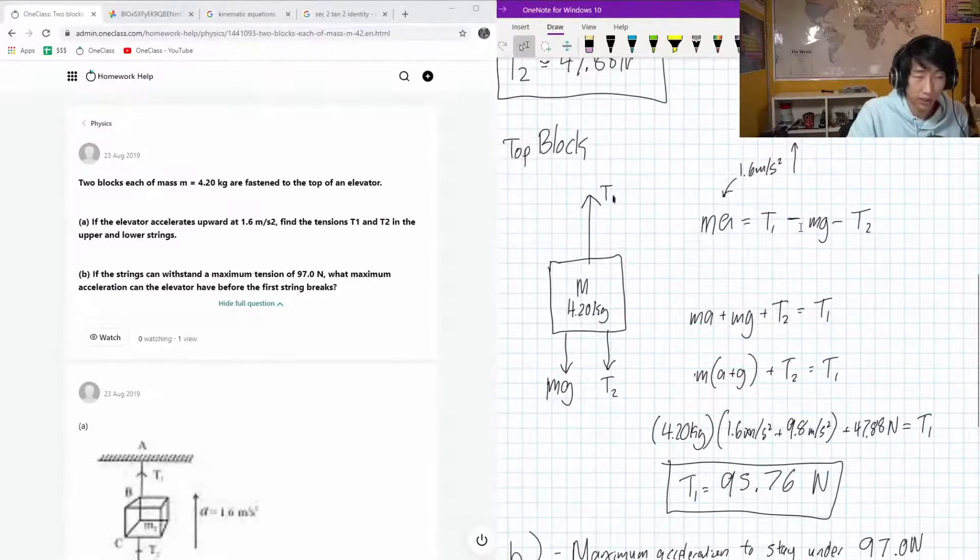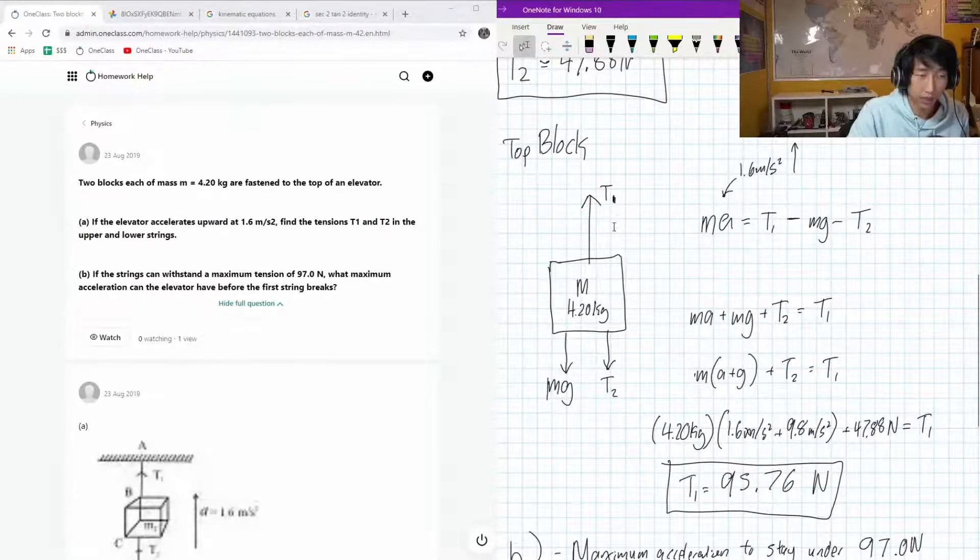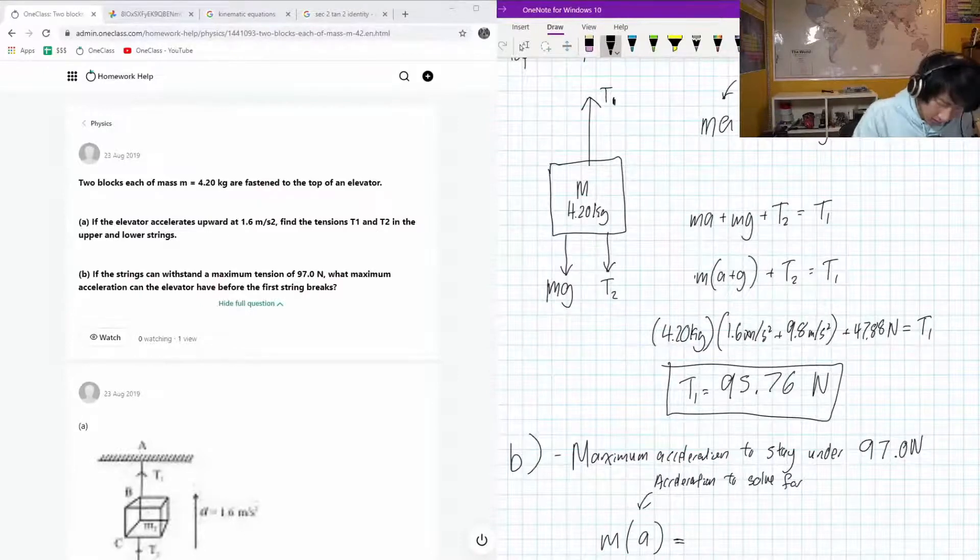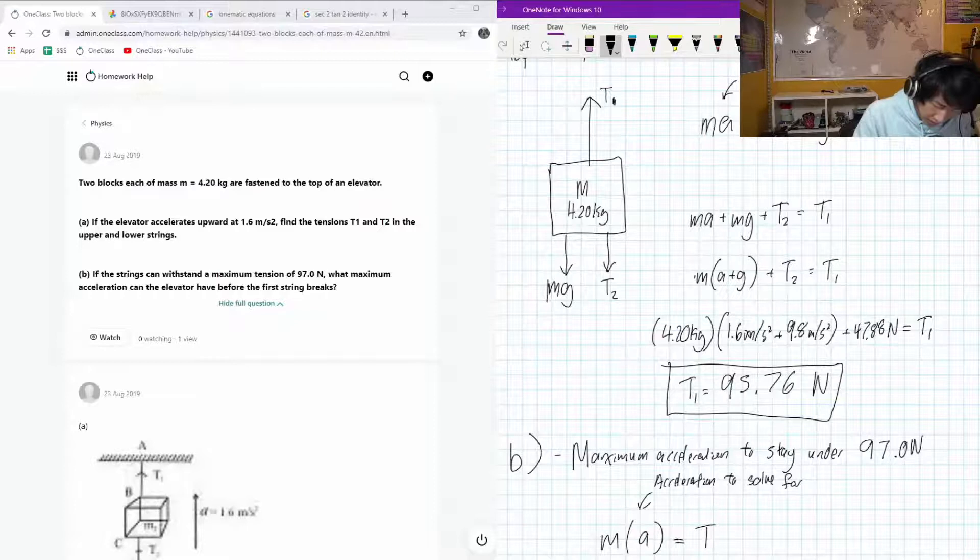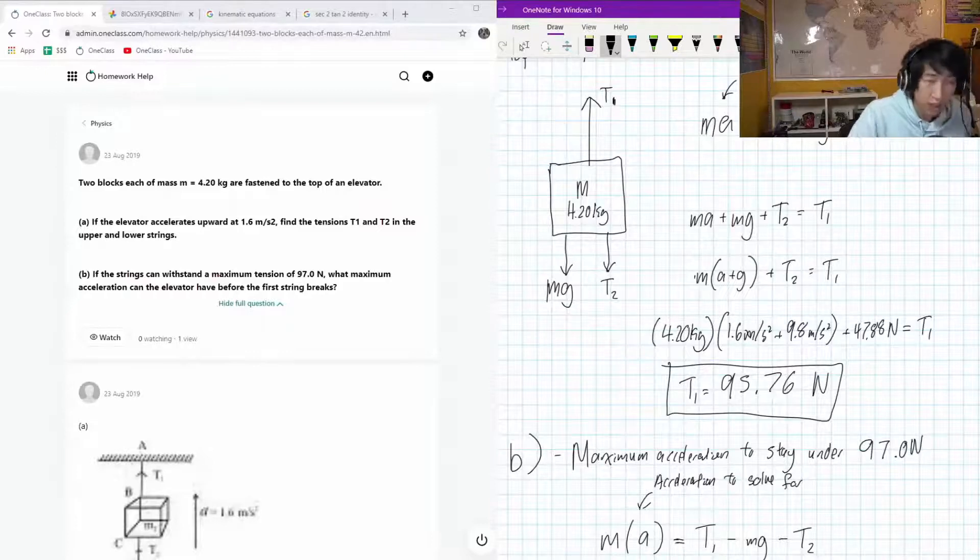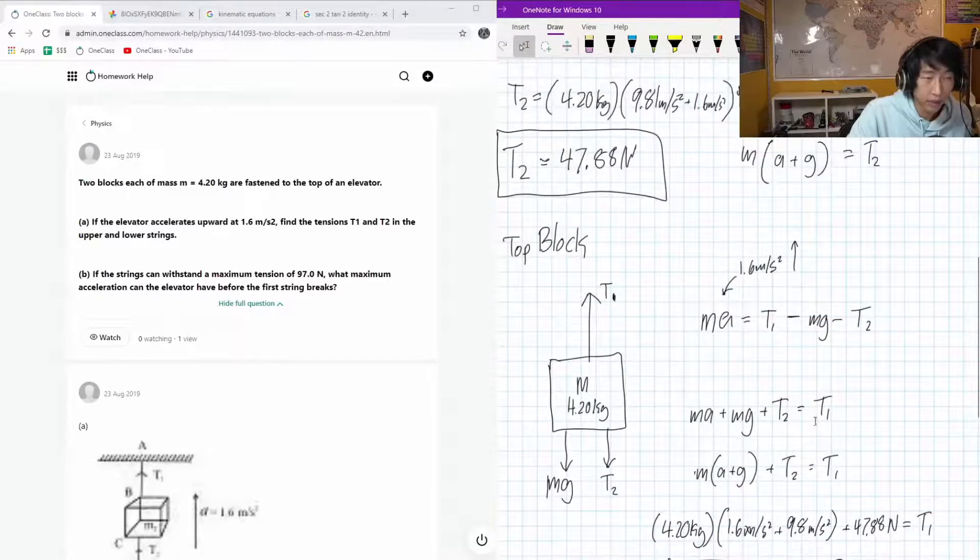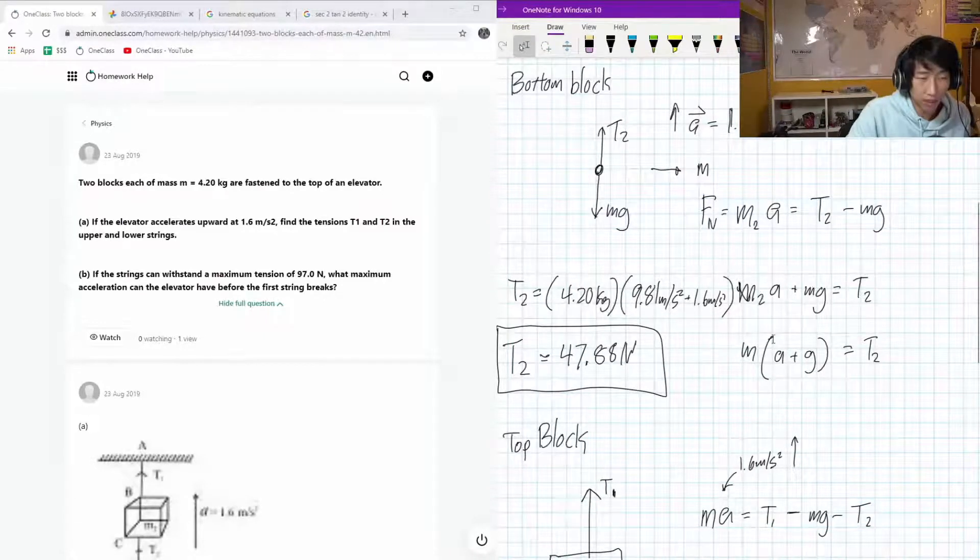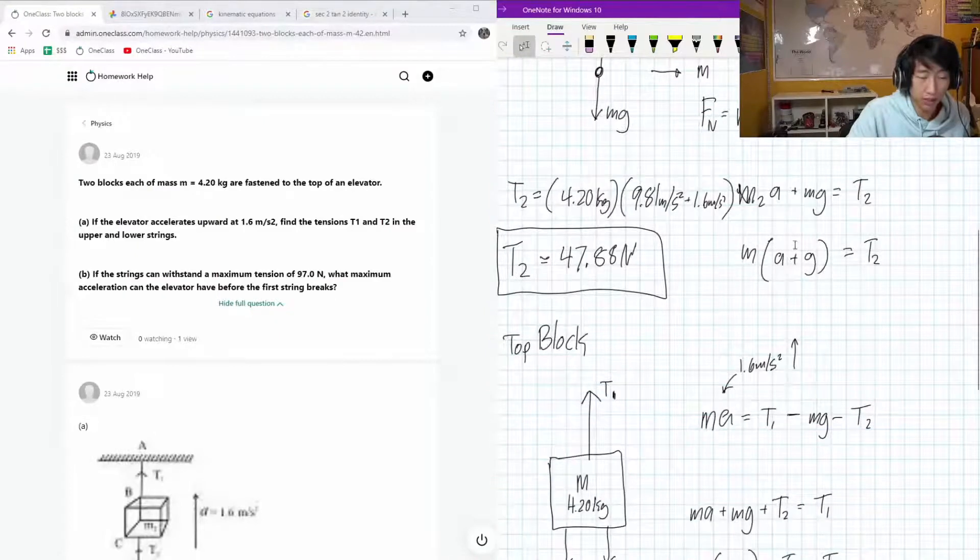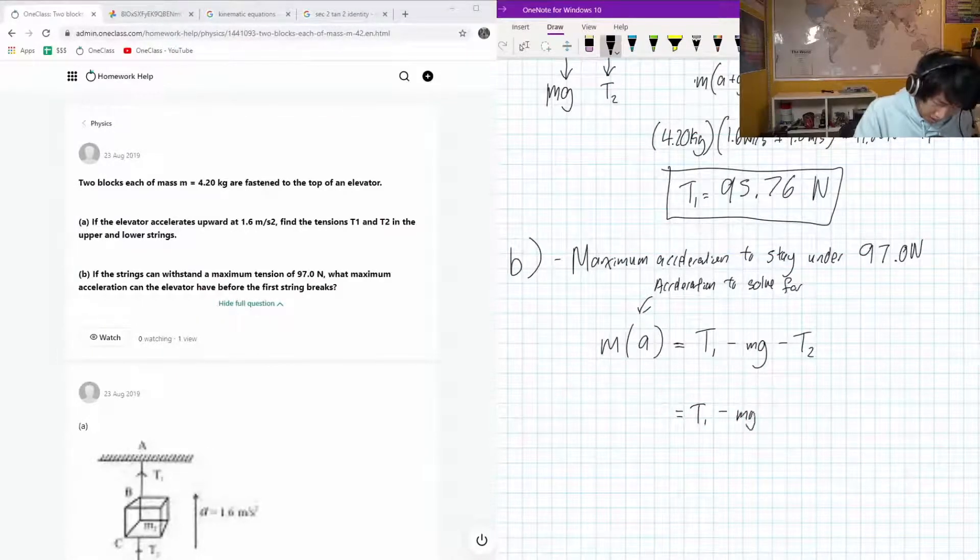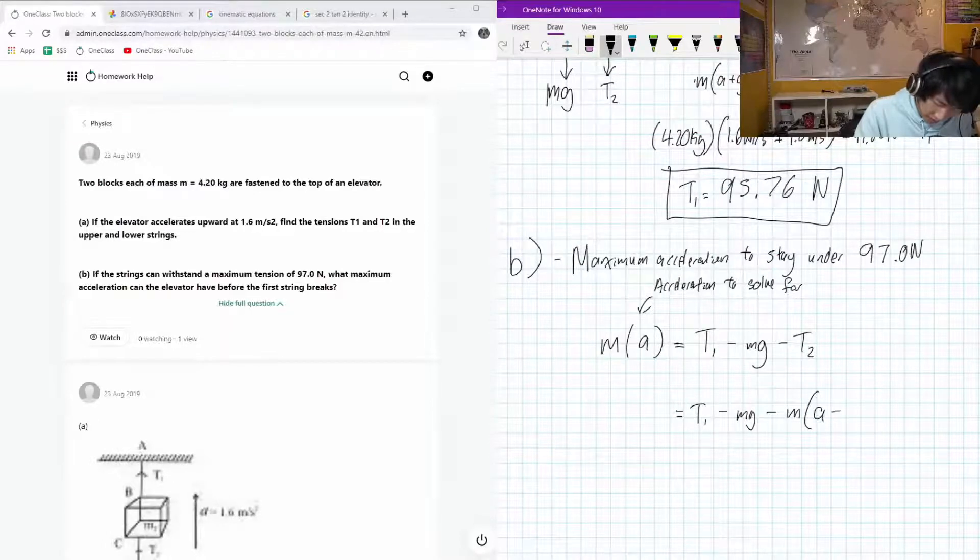Acceleration to solve for. This is going to be set up in the same way, it's going to be the tension upwards. It's not going to be the total mass, my bad. It's just going to be one of the masses. It's going to be equal to the tension in one minus mass times gravity minus tension two. And we know that tension two is pulling its original equation out. It's going to be mass times acceleration that we're trying to solve for plus gravity.